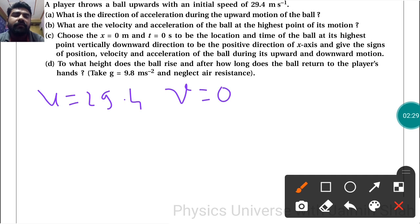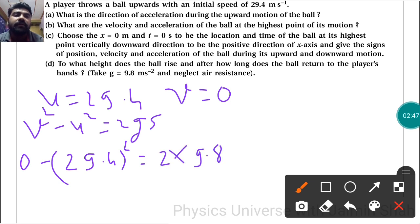So we can put the formula - third equation of motion: v² - u² = 2gs. So v = 0, 29.4² = 2 × 9.8 × s. Now here 29.4 - we have to calculate. So see here 29.4 × 29.4, so we will get 864.36.